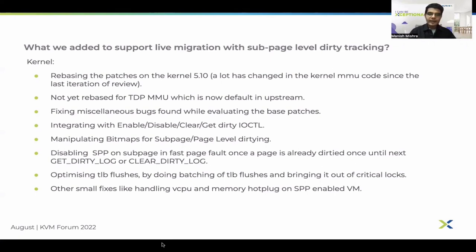We integrated SPP with get-dirty and clear-dirty IOPTEL to fully fit SPP in the live migration workflow. Then we managed different sizes of bitmap based on whether SPP is enabled or not. We replaced most mark-page-dirty calls with mark-subpage-dirty wherever we could safely do so. We also optimized TLB flushes by batching them and only doing TLB flushes on required ranges instead of full TLB flushes, and tried to bring TLB flushes out of critical sections wherever possible. Other small fixes included handling vCPU and memory hotplug after SPP is enabled.